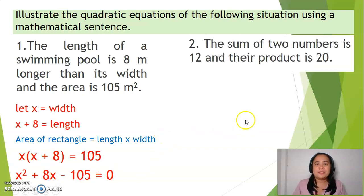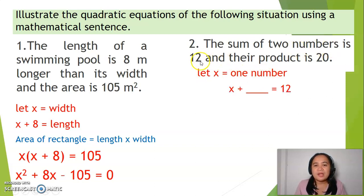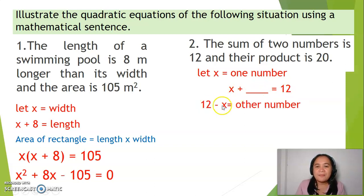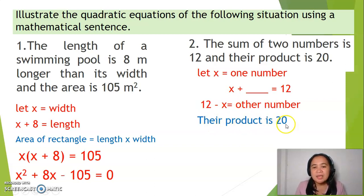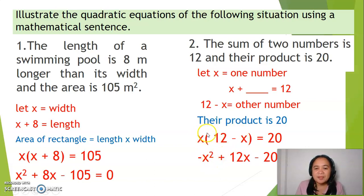Another example: the sum of two numbers is 12 and their product is 20. Let x be one number. Since x plus another number equals 12, the other number is 12 minus x. Their product gives x times (12 minus x) equals 20. Distributing x, we end up with negative x squared plus 12x minus 20 equals 0.